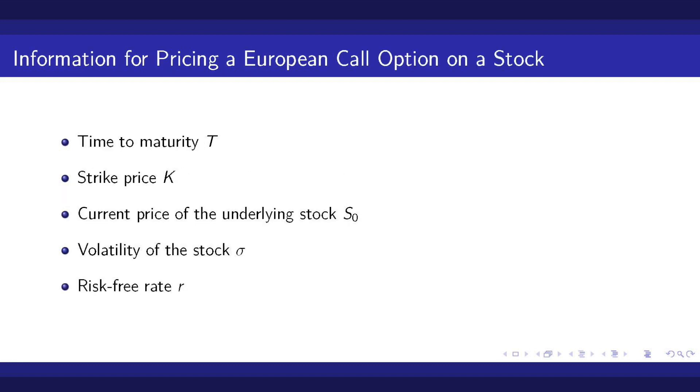To calculate the fair price, we need some information about the stock and the option itself. We need the time to maturity, denoted as capital T, which is the time from now until the end of the lifetime of the option and hence the time when the buyer has to decide whether to exercise the option or not. Next, we need the strike price of the option K. This is the price that the buyer has to pay for the underlying stock, if he decides to exercise the option.